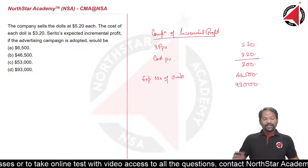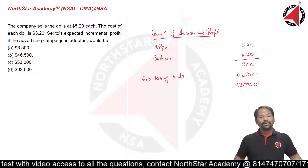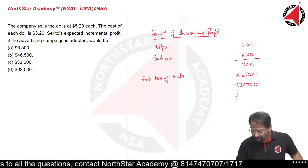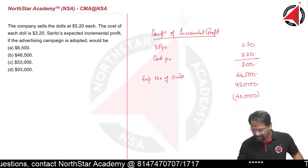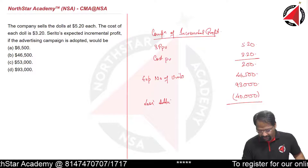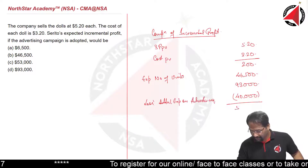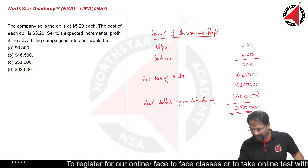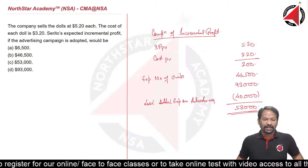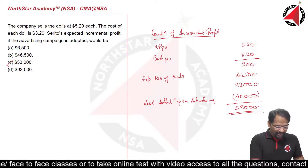This $93,000 is the extra profit the company could earn if they spend on advertising. The additional expenditure on advertising is $40,000. Deducting that, the total incremental profit the company can expect is $53,000. So the correct answer would be option C: $53,000.